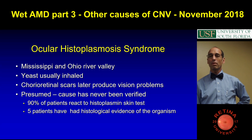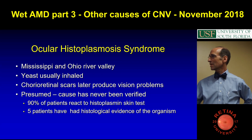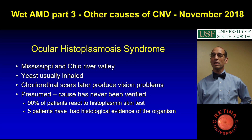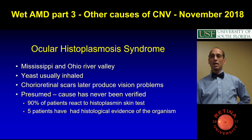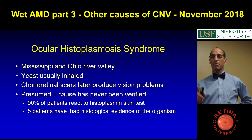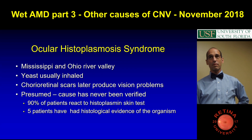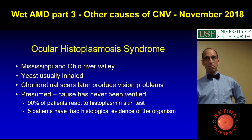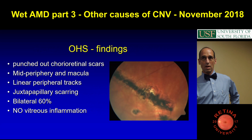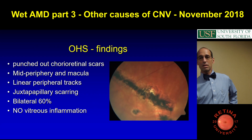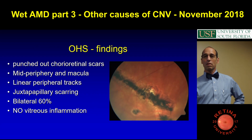If you look in the periphery, you tend to see punched-out chorioretinal scars. Sometimes you see these linear ones, which are kind of cool. In the mid-periphery, there's also juxtapapillary scarring usually, and usually bilateral. There's not vitreous inflammation by definition. So if there's vitreous inflammation, it's multifocal choroiditis. If it's not, it's ocular histoplasmosis.